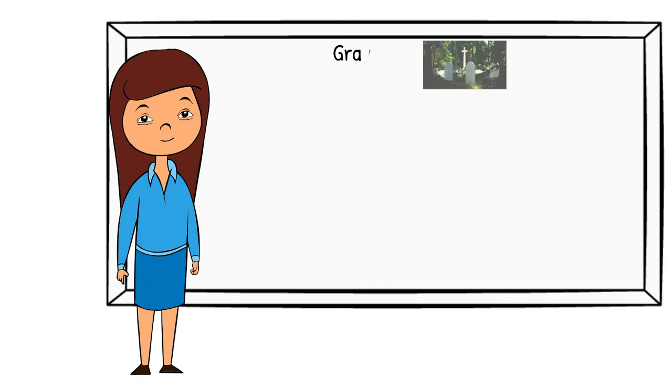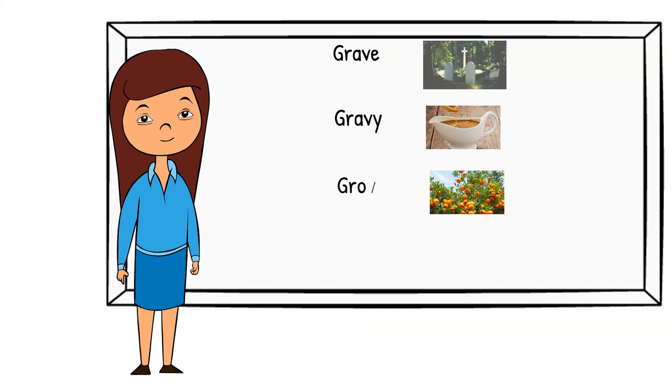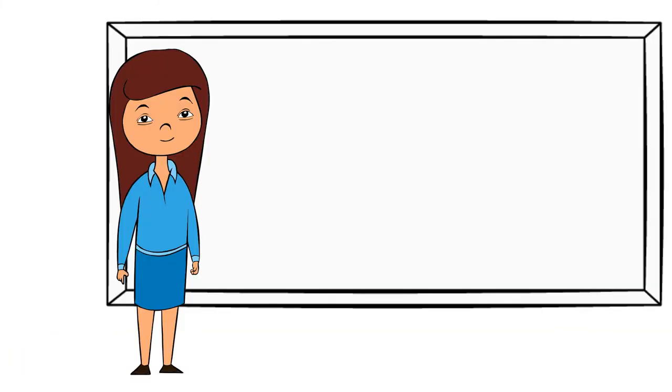Grave. Where someone is buried. Gravy. Totally different word. It's the sauce that you put over your food. Like on schnitzel. Grove. We have an orange grove in our backyard. Gravel. We have gravel on our road and in our driveway.